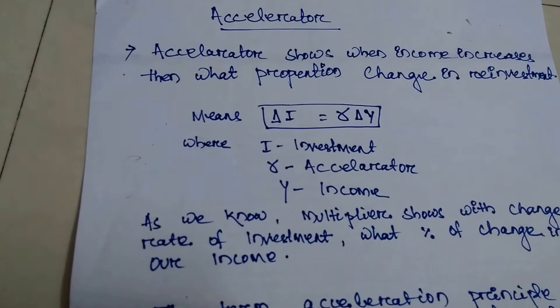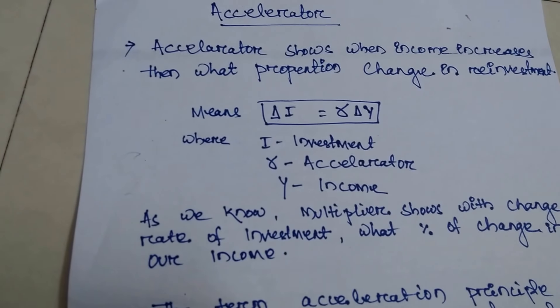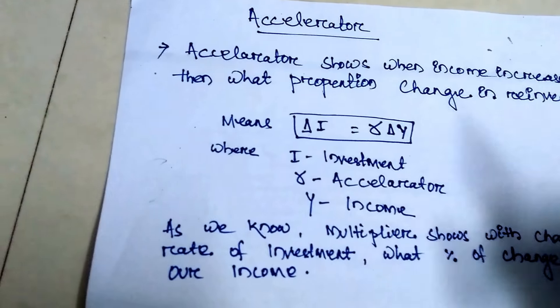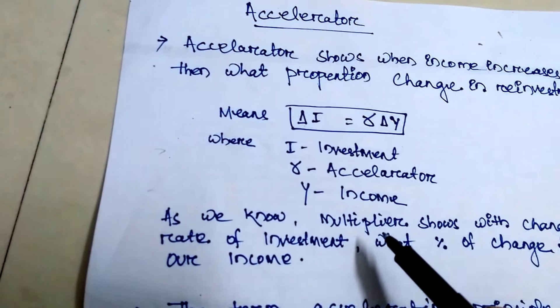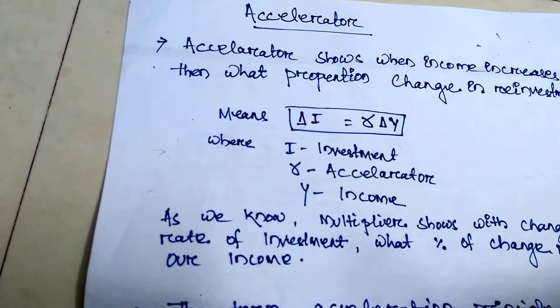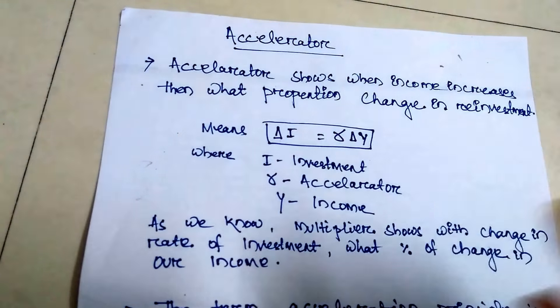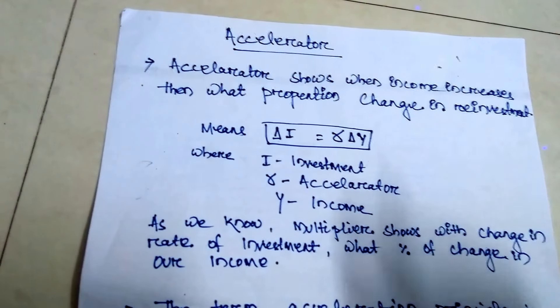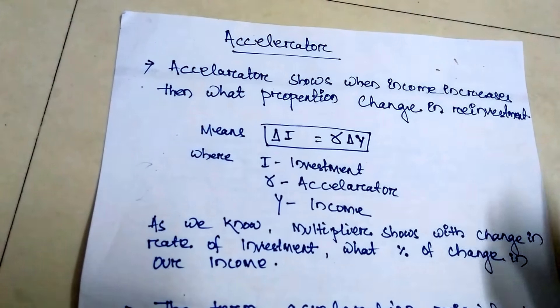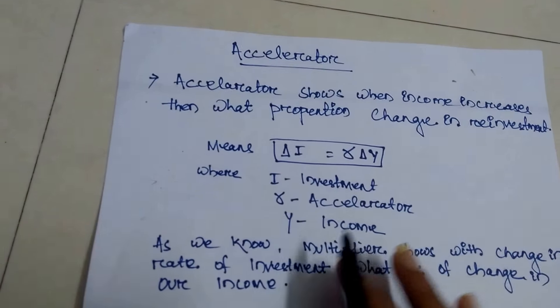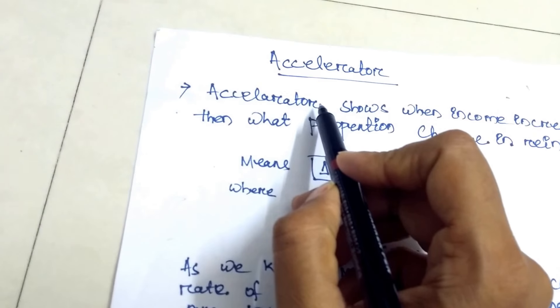In the previous video we discussed the multiplier. Today we discuss the accelerator. In the multiplier, we see that with a change in the rate of investment, what percentage change occurs in income. But in the accelerator, we have to see that when income increases, what type of change occurs in reinvestment.